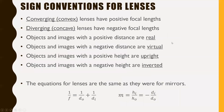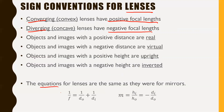For sign conventions: converging (convex) lenses have positive focal lengths, and diverging (concave) lenses have negative focal lengths. Objects and images with positive distances are real; negative distances are virtual. Positive heights are upright; negative heights are inverted. The equations for lenses are the exact same as they were for mirrors and work the exact same way. Both formulas are on your formula sheet and are still used for lenses.